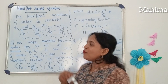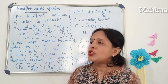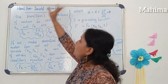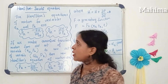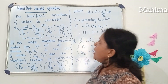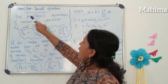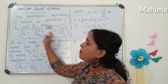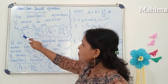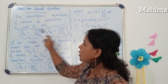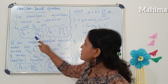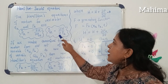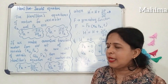Hi friends, today we have to discuss a topic from classical mechanics, that is the Hamilton-Jacobi equation. This is an MRT level topic. The Hamilton equation of motion for variables qk and pk can be written as: pk dot is equal to minus del H by del qk, and qk dot is equal to del H by del pk.